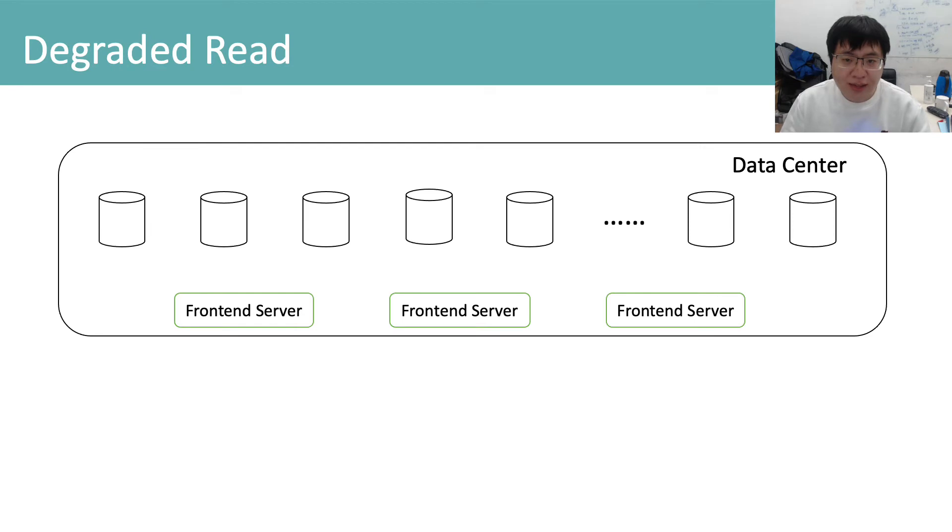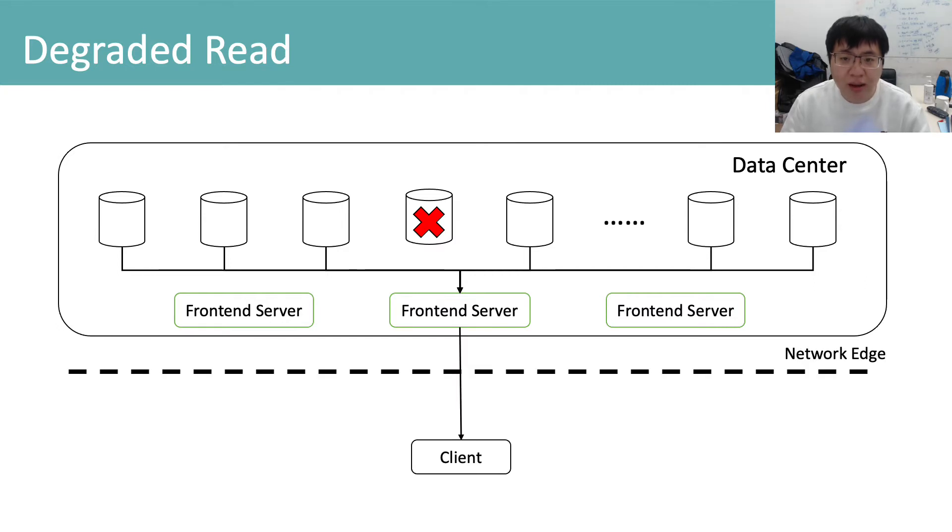Degraded read is a process of reading an object when an object needs to be repaired because the server storing the object fails. To read an unavailable object, a user issues a request to the object storage system. The front-end server then repairs the object and transfers the object back to the client. It is obvious that repairing and transferring can be pipelined and conducted in parallel with each other.